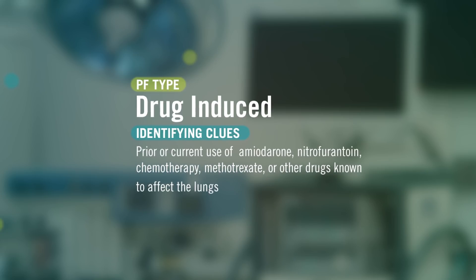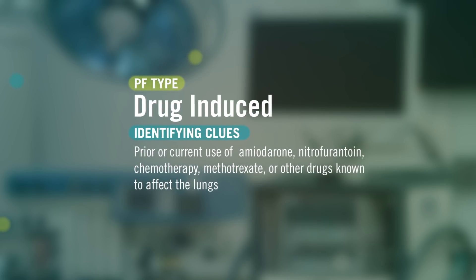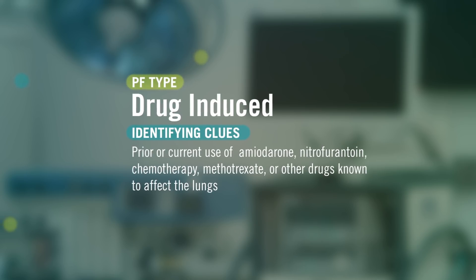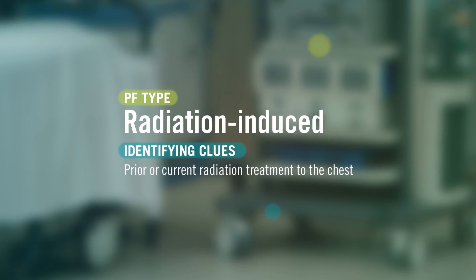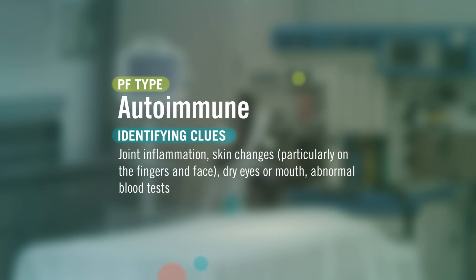Other causes of pulmonary fibrosis include certain medications, including amiodarone for cardiac arrhythmias, nitrofurantoin for urinary tract infections, and chemotherapy for different forms of cancer. Radiation treatment for cancers in the chest can also lead to pulmonary fibrosis. People who have autoimmune conditions like rheumatoid arthritis or scleroderma are also at risk.